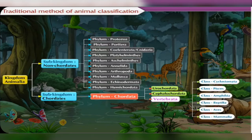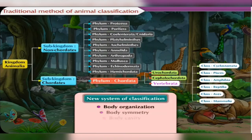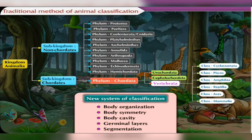However, nowadays a new system of classification is used. This system is based upon criteria like body organization, body symmetry, body cavity, germinal layers, and segmentation. Let us study about each of these criteria one by one.